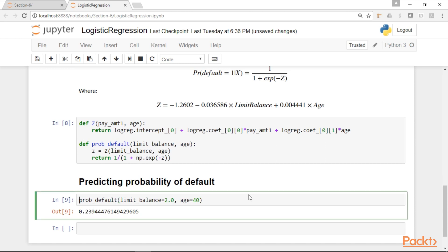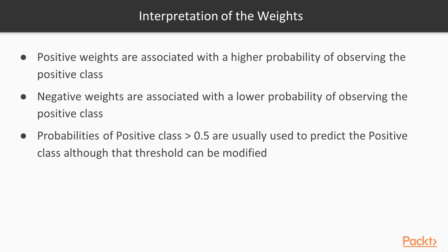A few words about the interpretation of weights: if you get positive weights, they are associated with a higher probability of observing the positive class. Remember that what we get from these models are probabilities. We can use these probabilities to assign an observation to the positive or negative class, and the default threshold used is 0.5. So if you get a probability equal to or greater than 0.5, you predict the observation belongs to the positive class. This threshold can be modified, and we will see in the examples how and why.